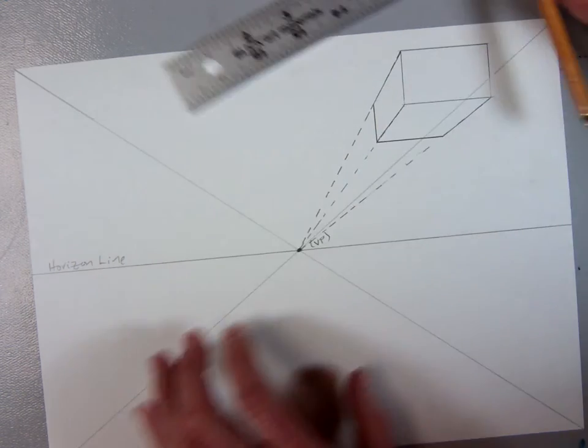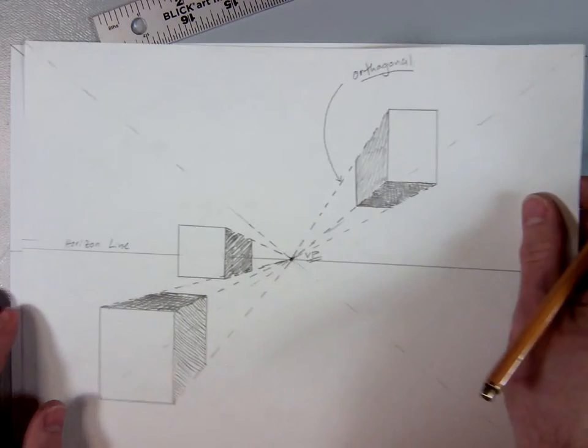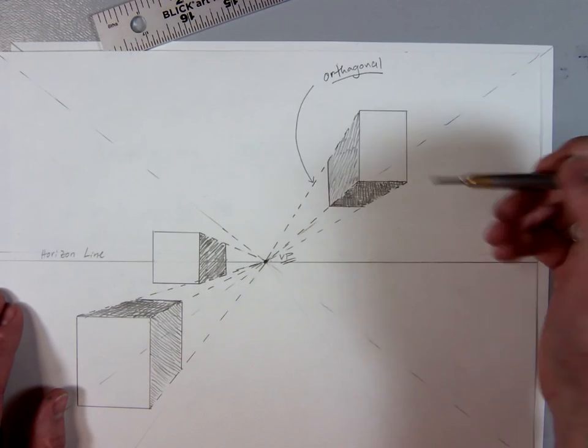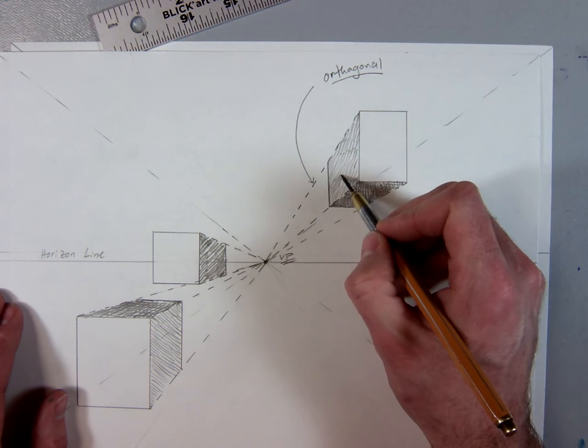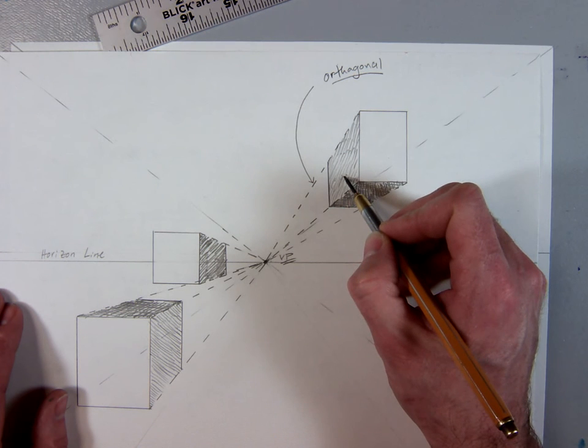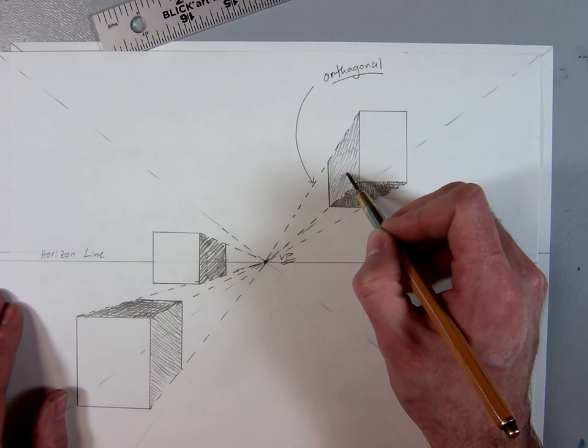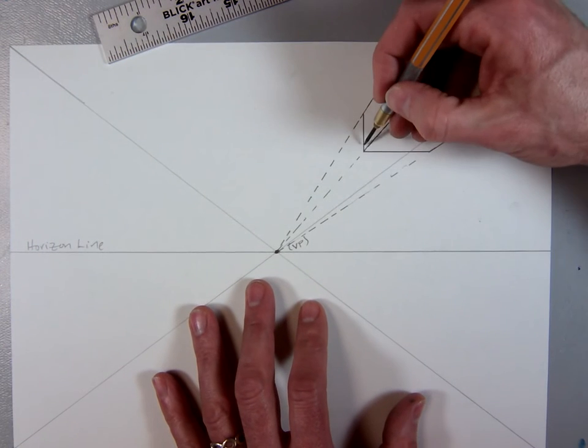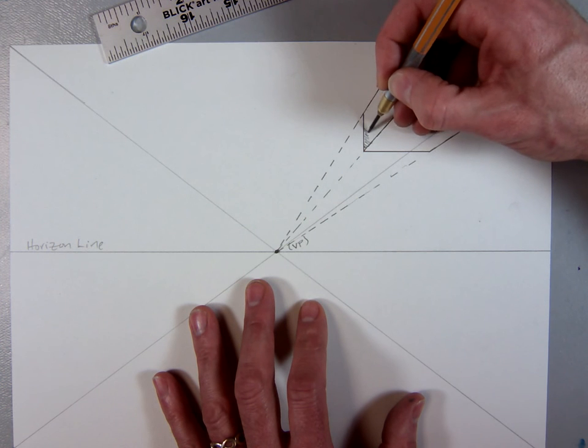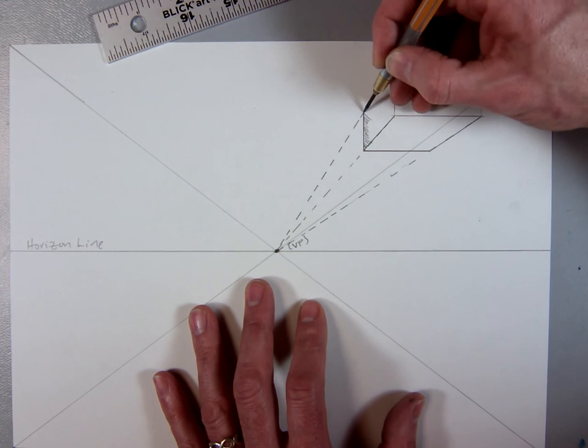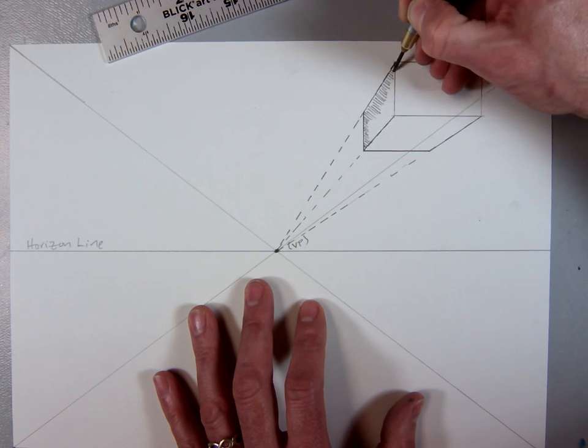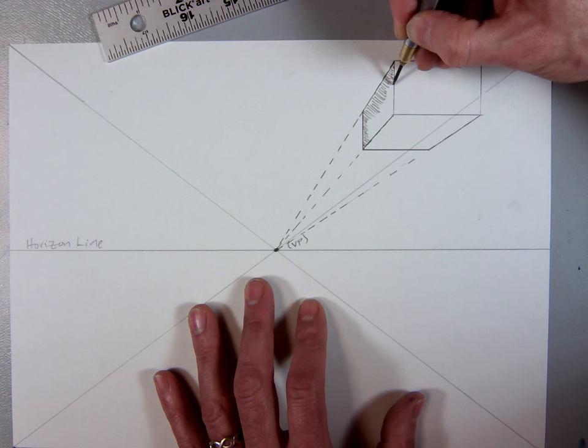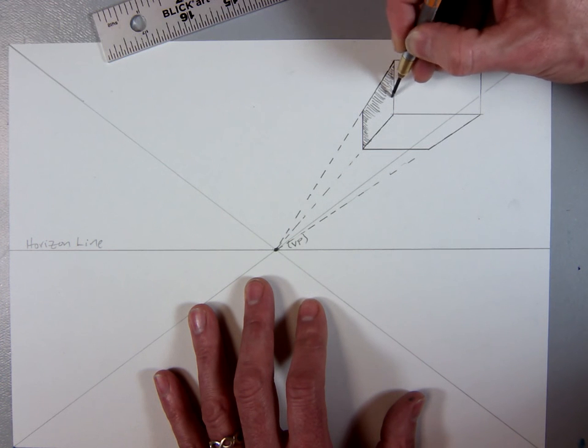Once you're done with your rectangular prism, I would like you to leave the front facing edge blank, one of the sides lighter, and the other one darker. So I'm just going to go back and put some simple cross-hatching in. Cross-hatching is just little tiny lines. I like to go from the edge of my box in towards the center, then I kind of stay closer to the edge of my box.